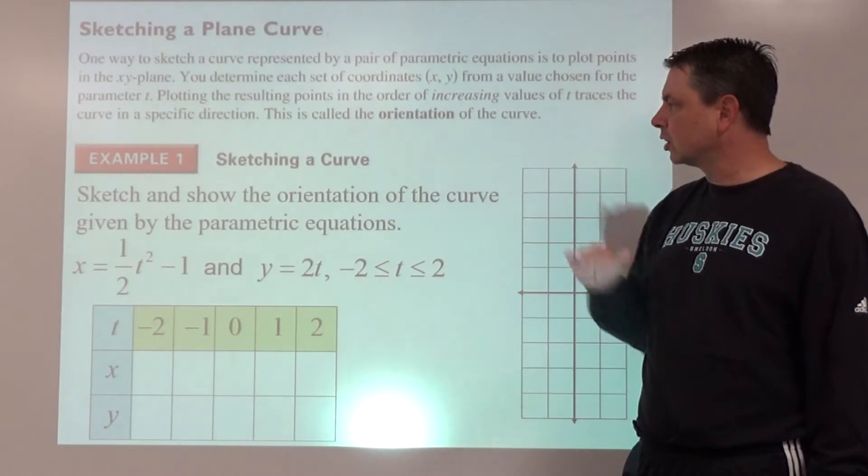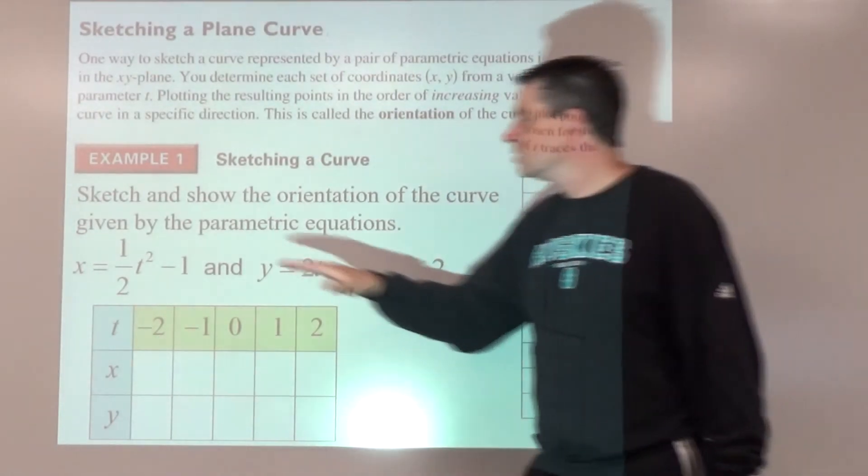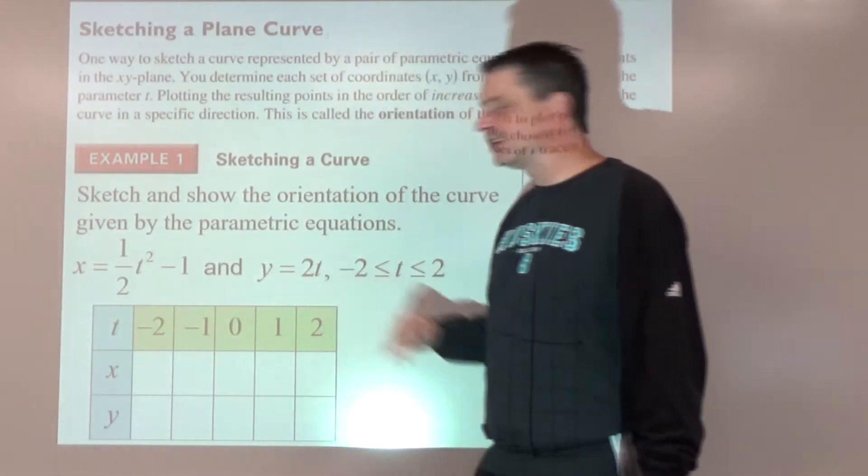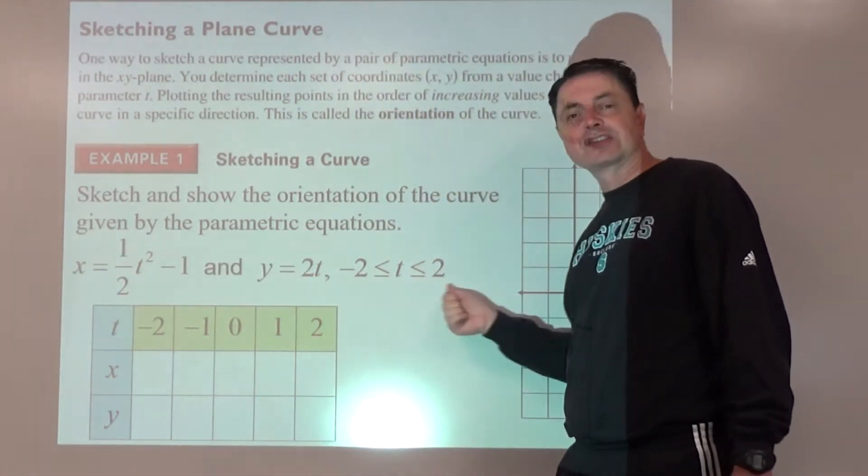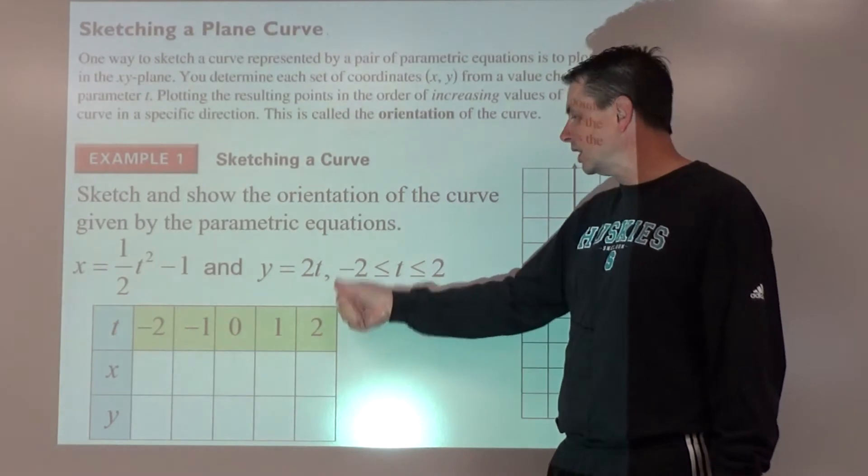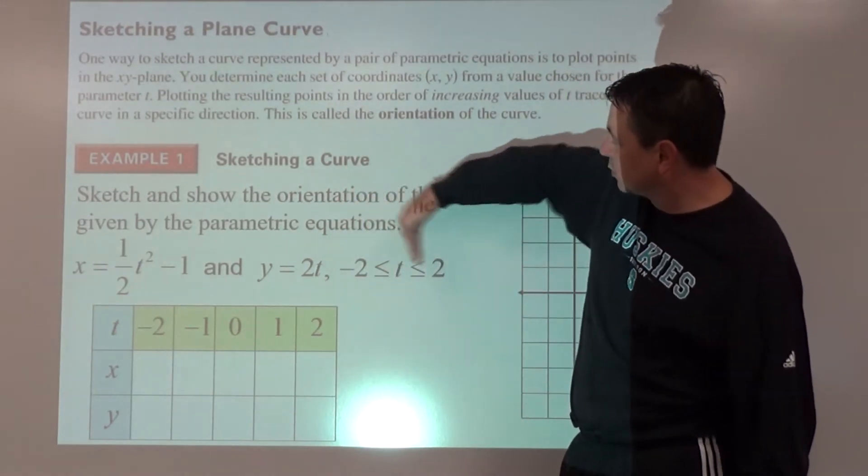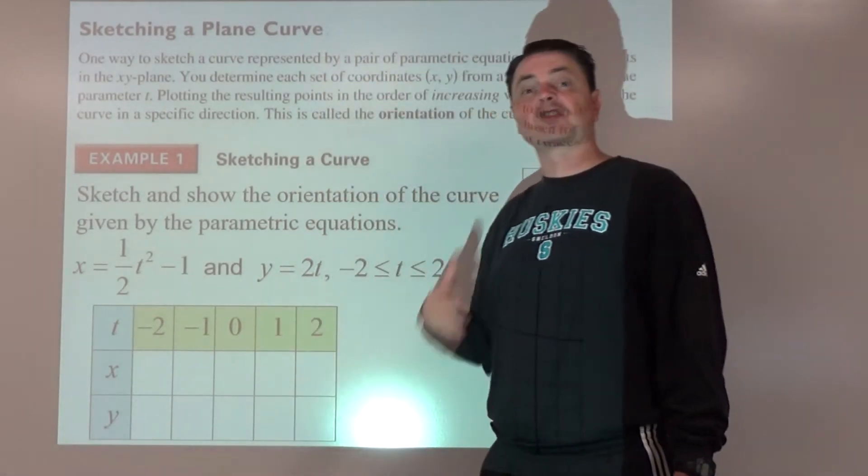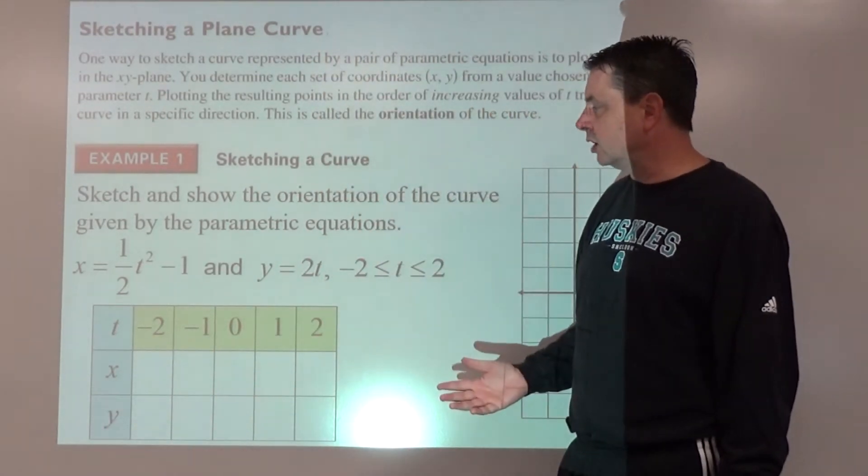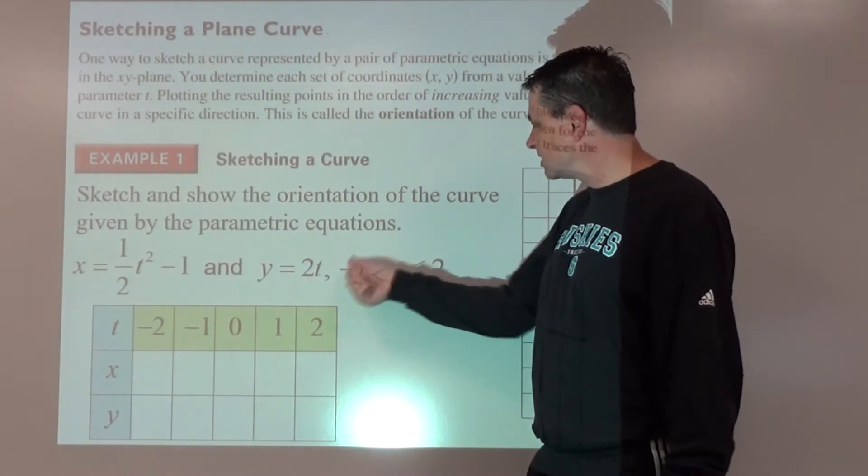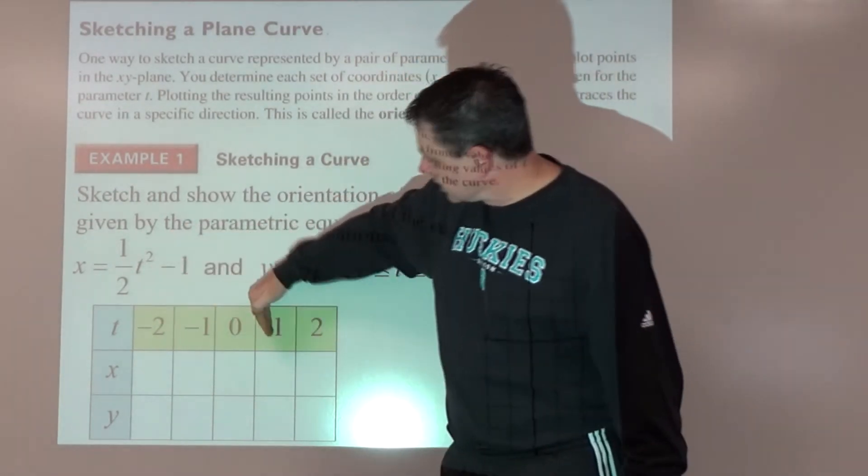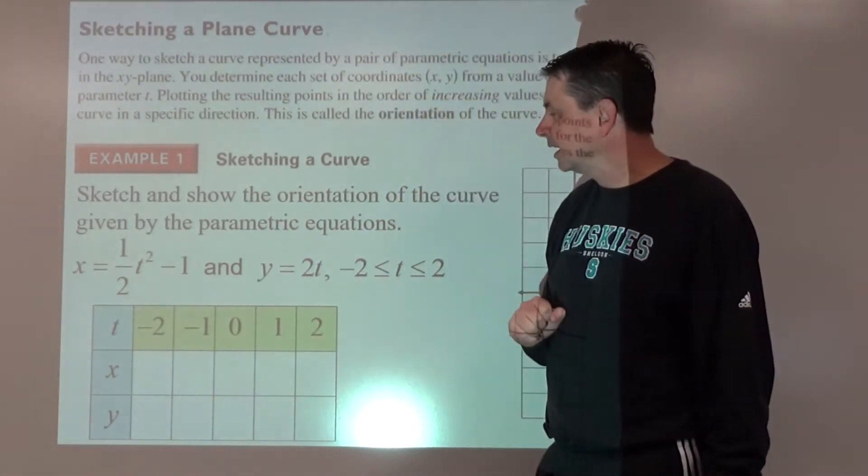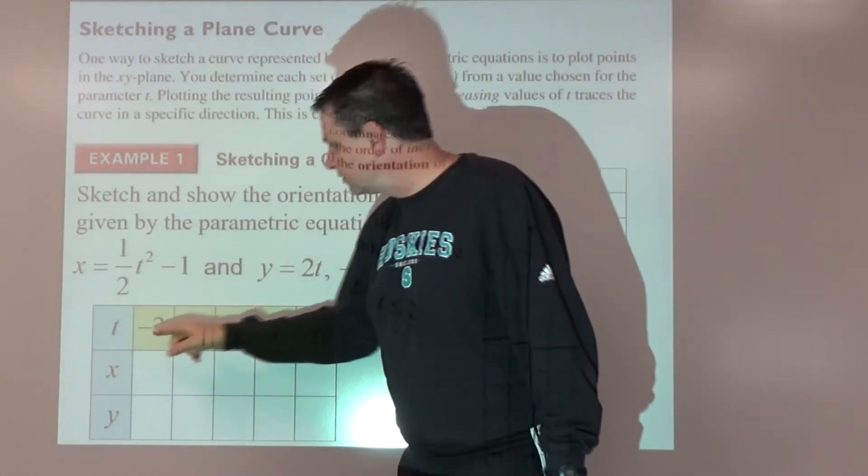Sketching a plain curve, example number one. We've got a set of parametric equations. x is defined as, y as defined as, and here's i, our interval. We're saying that t has to be between -2 and 2. So we could set up a table of values to explore this and see what's going on, and since t has to be between -2 and 2, five points seems to be good choices here.